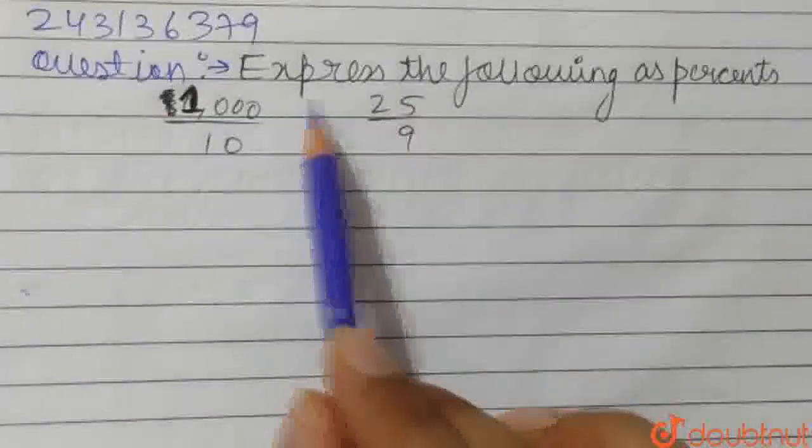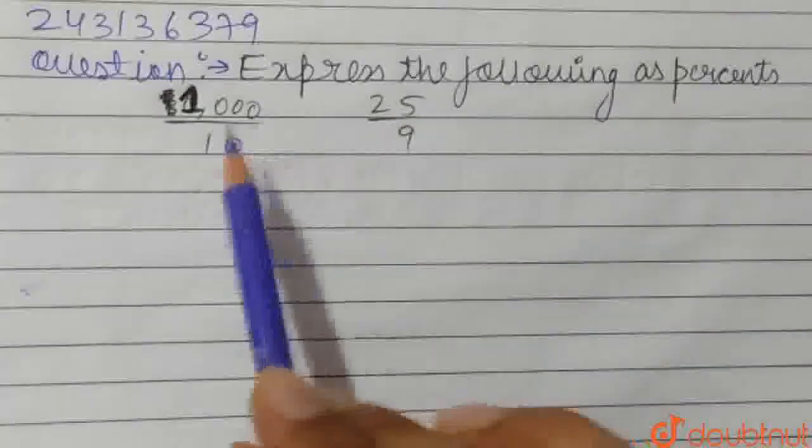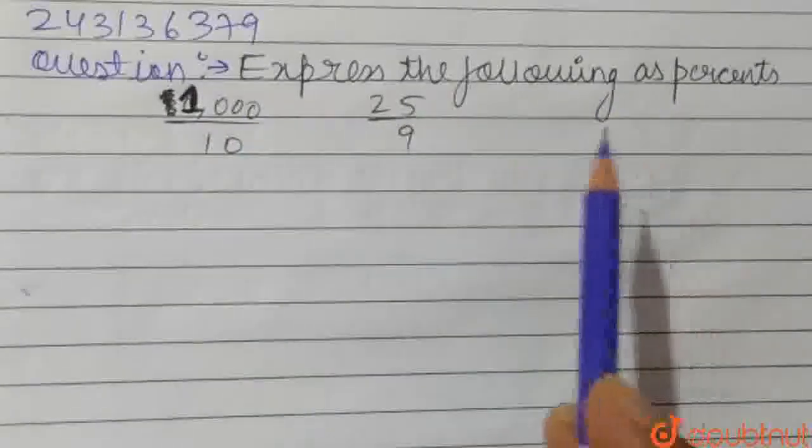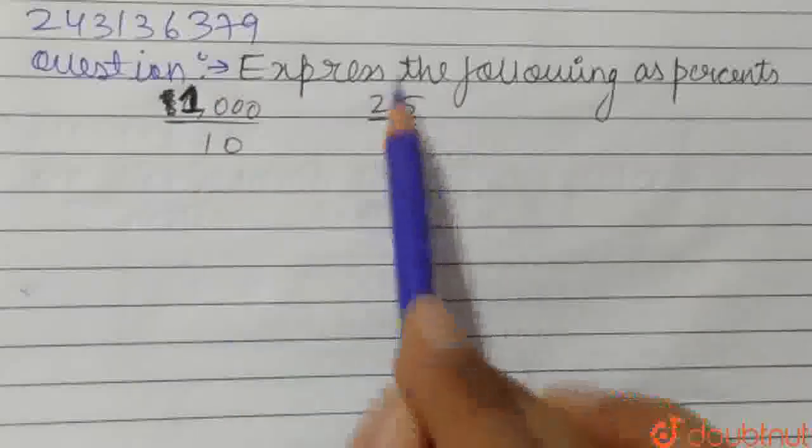Hello friends, in this question, we need to express the following as percentages. First is 1000 upon 10, second is 25 upon 9.